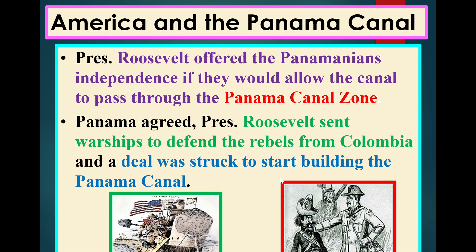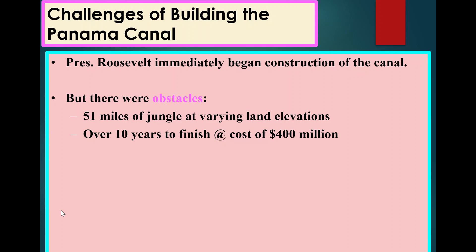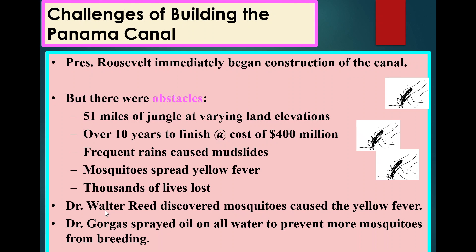President Roosevelt immediately begins construction of the canal once the United States liberates Panama from Colombia. However, there were major obstacles: 51 miles of jungle, varying land elevations. It takes over 10 years to finish at a cost of $400 million. Frequent rains cause mudslides, tens of thousands of people die, many die from mosquitoes and yellow fever. It's an incredibly difficult and violent period. They literally had to blast it open with dynamite and then worked together to create a large waterway.